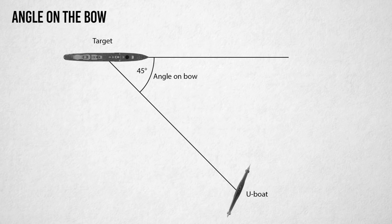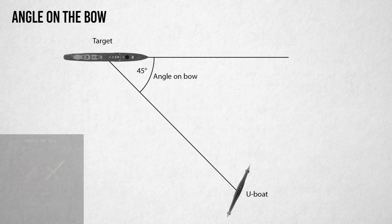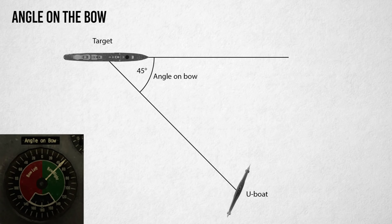The angle on the bow is the angle between target course and target bearing. If the U-Boat is 45 degrees to the right of the target, then the angle on bow is 45 degrees right.